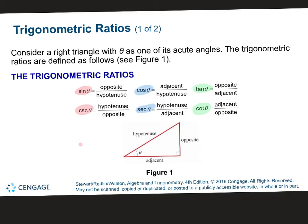So if sine is opposite over hypotenuse, then your cosecant is hypotenuse over opposite. Cosine is adjacent over hypotenuse, so your secant is hypotenuse over adjacent. Tangent is opposite over adjacent, so cotangent is adjacent over opposite.